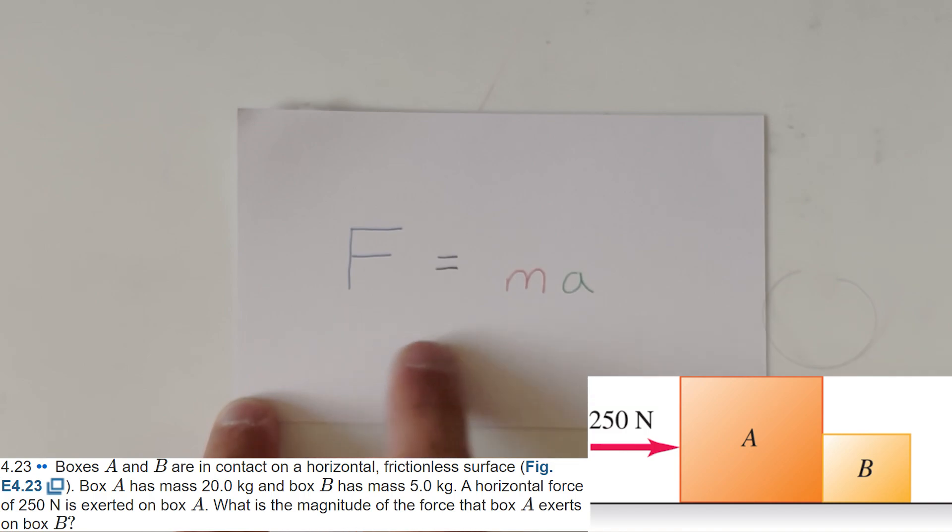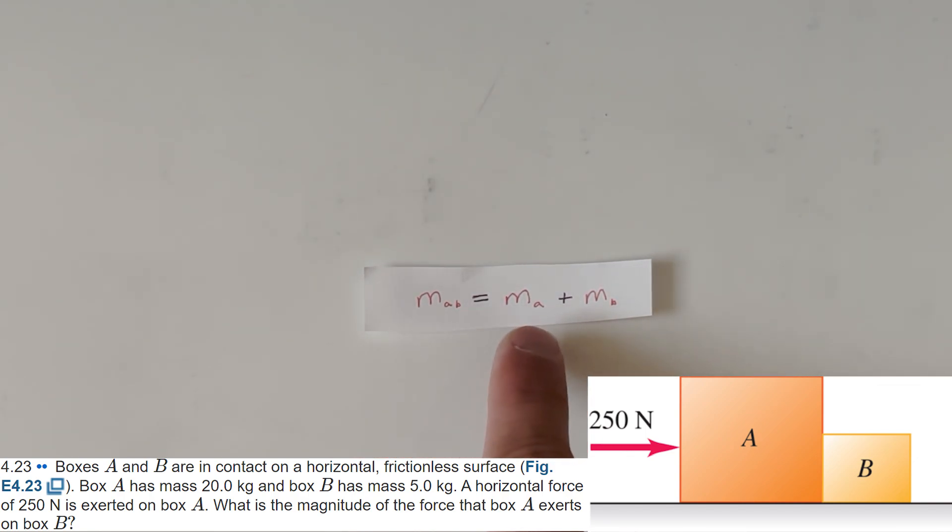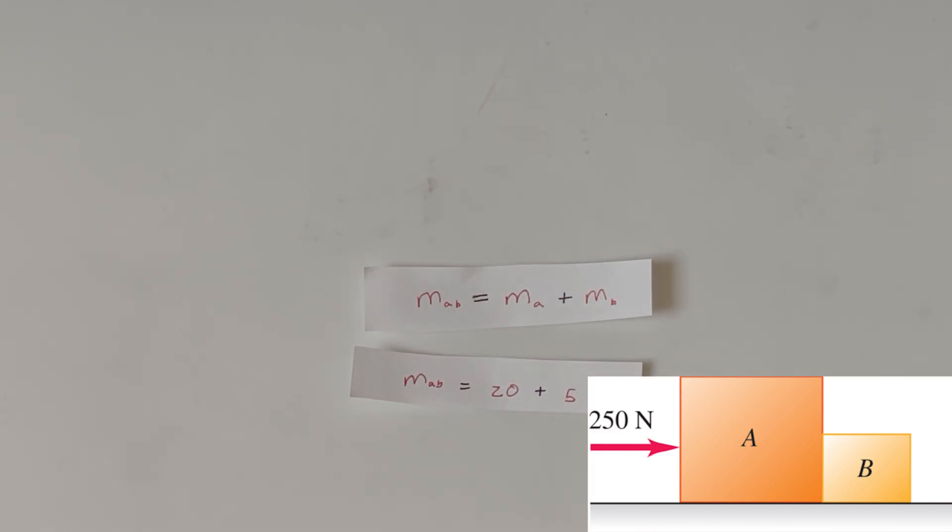So in order to find that acceleration, we're going to need to use this equation on a grander scale. So to do that, let's find the mass of block A and B together. So it's pretty simple, right? We know that A is 20 kilograms and B is 5 kilograms. So we're just going to add the masses together. Mass AB is equal to mass of A plus mass of B. That's going to be 20 plus 5. And, of course, that's 25 kilograms.